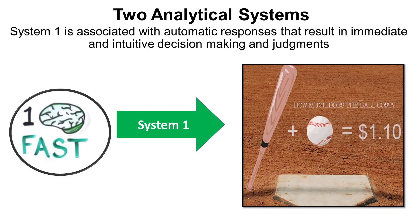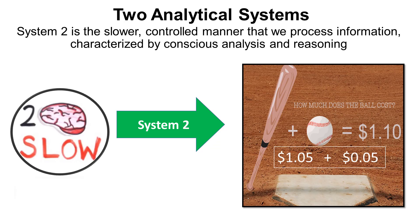Crawford Hollingworth and Liz Baker provide this example to demonstrate the difference between System 1 and System 2 thinking: A bat and a ball cost $1.10. The bat costs $1 more than the ball. How much does the ball cost? System 1 thinking results in the answer being $0.10. The actual answer is $0.05. When you stop to process this puzzle, you are using System 2 thinking.